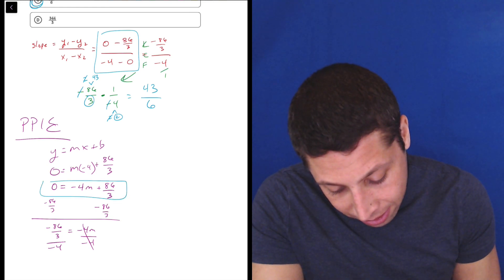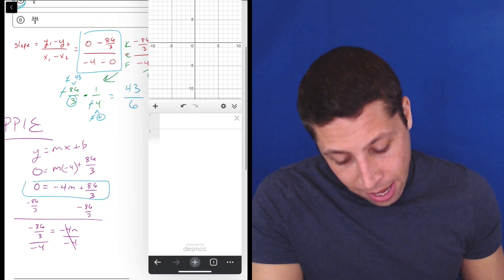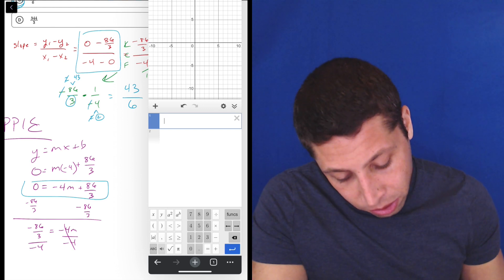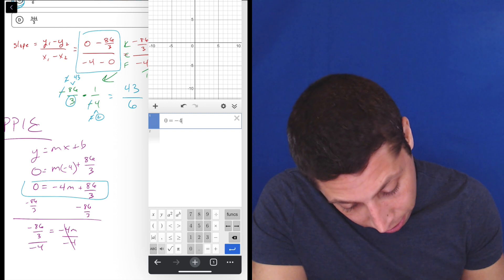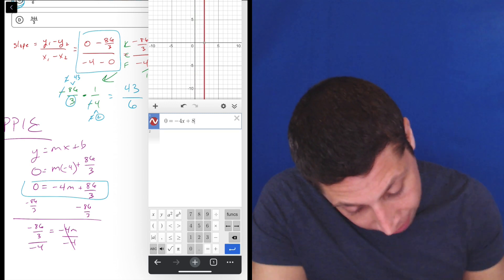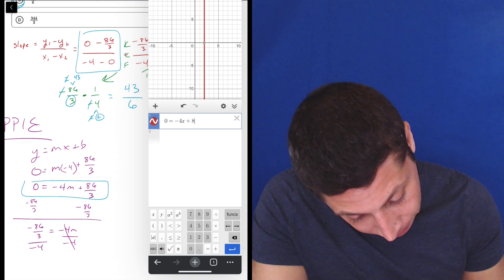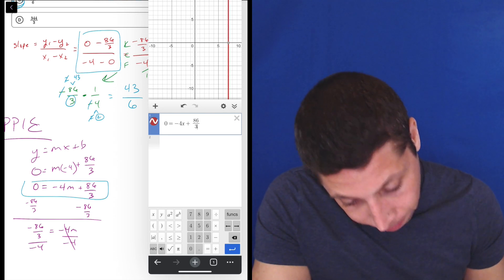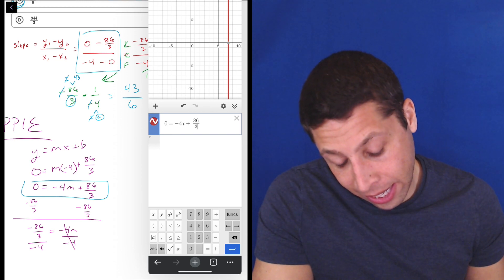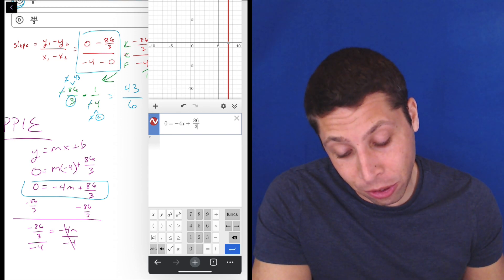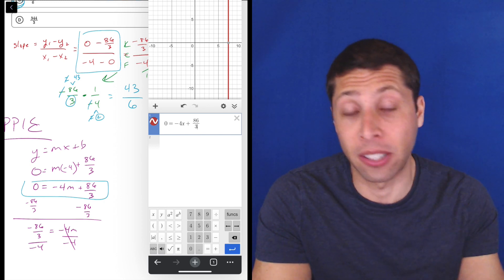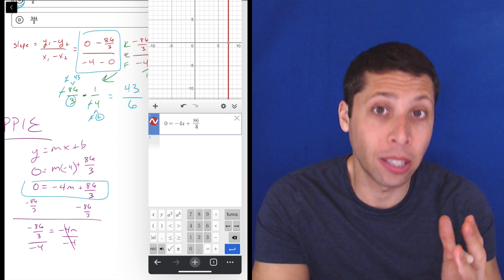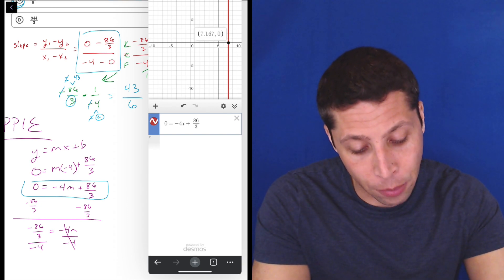So 0 is equal to negative 4, we'll just do x, plus 86 thirds. And so there you go. It's going to solve it the same way we've seen in other questions for this, is that when we have an equation with one variable, no matter where that variable is, it's going to treat it like just something to solve, and it's going to give us a vertical line if there is a solution.